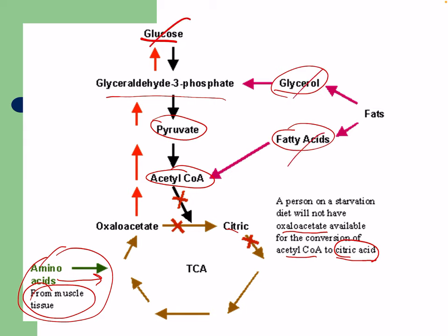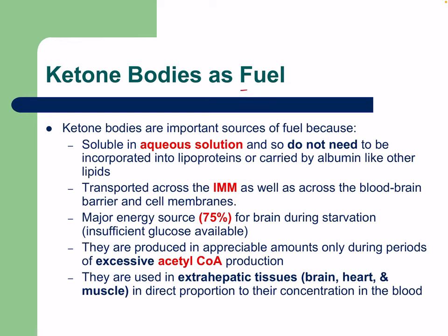Without oxaloacetate, we can't complete the citric acid cycle properly, which stimulates ketone body production. Ketone bodies are an important fuel source because they are soluble in aqueous solution and do not need to be incorporated into lipoproteins or carried by albumin. They can be transported across the inner mitochondrial membrane without carnitine antiporters, and across the blood-brain barrier, providing energy to the brain in emergency situations.